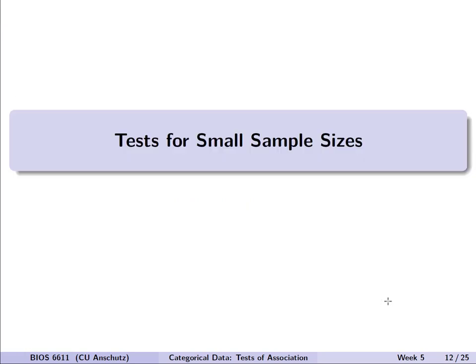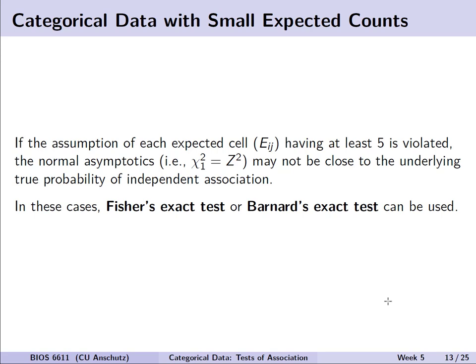What should we do if we have small sample sizes, or more realistically if we violate the assumption of expected cell counts for the chi-squared test? If that assumption is violated, we need to use a different test, because we're using a chi-squared distribution to approximate that discrete count outcome, and chi-squared is a continuous distribution. If we have fewer than five expected observations per cell, the normal asymptotics may not be accurate. In these cases we should use exact versions of tests such as Fisher's exact test or Barnard's exact test.